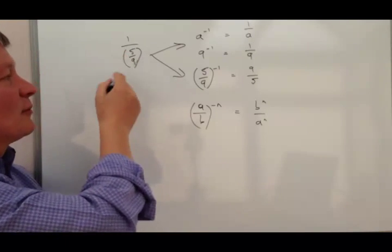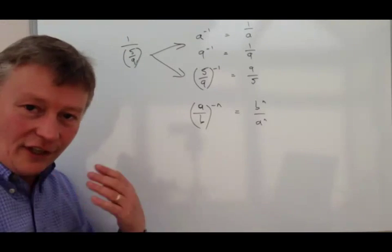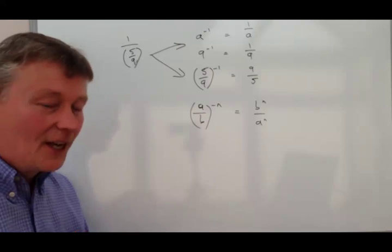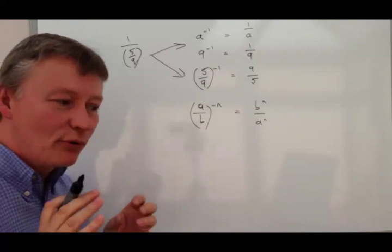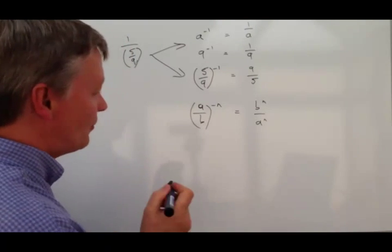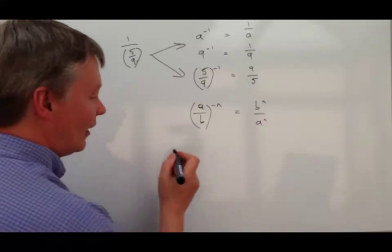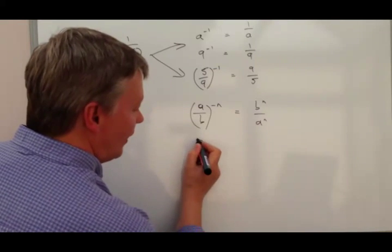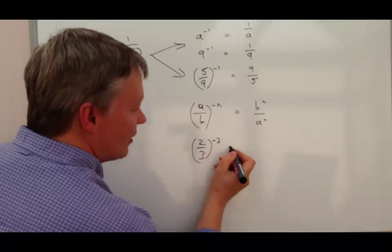So we're really doing no different to what we've done over there. It's just another flip around. So let's give you a practical example of that. Let's say we've got a question which is something like 2 over 3 to the power of minus 3.